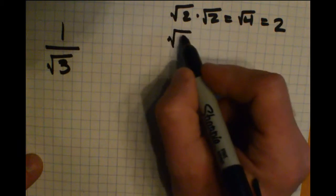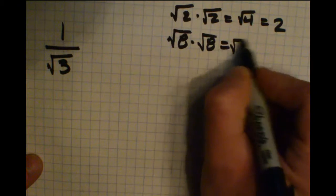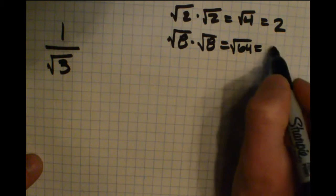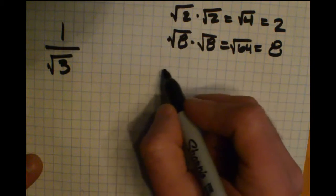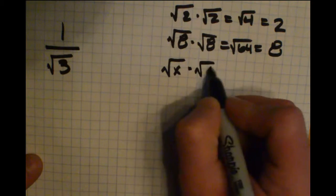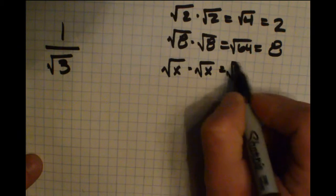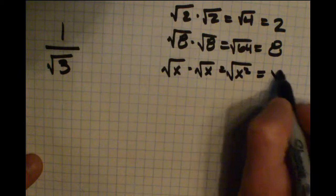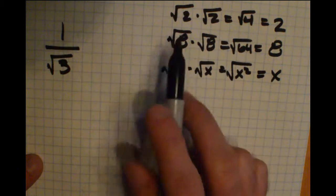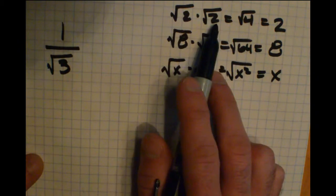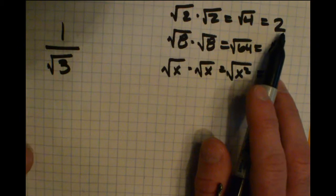If you took square root of 8 times square root of 8, you'd get square root of 64, and the square root of 64 is just 8. If you took square root of x times square root of x, you'd get square root of x squared, and that is just x. Essentially, any time you multiply a radical by itself, you are just left with whatever was under the radical.